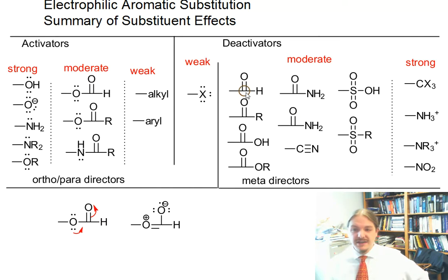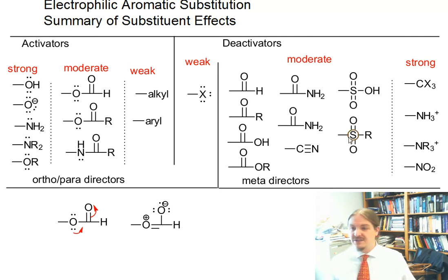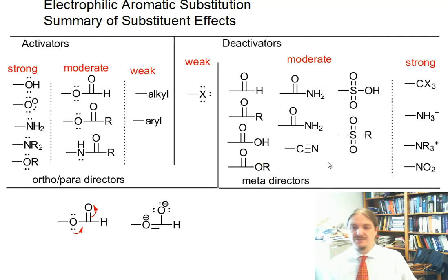Next are the moderate deactivators. These deactivate by withdrawing through resonance only. All of these groups are connected mostly at carbon atoms, so there's no significant electronegativity difference — or in a couple of cases, sulfur, whose electronegativity is relatively similar to carbon — meaning no real withdrawing by induction, only by resonance.